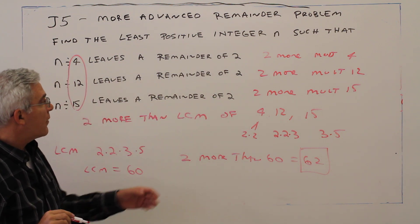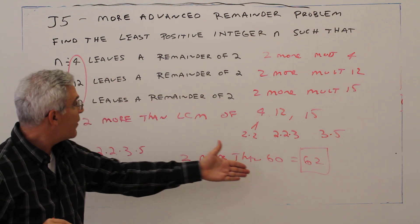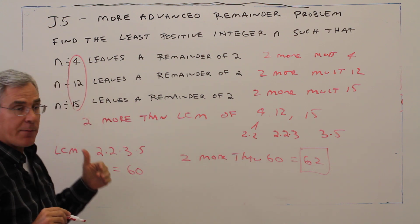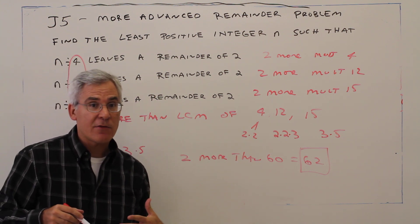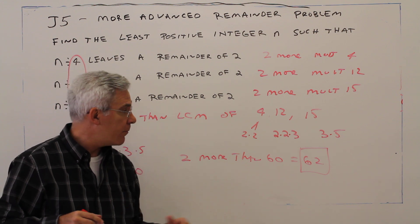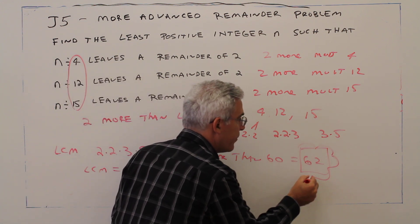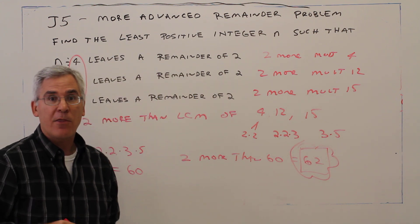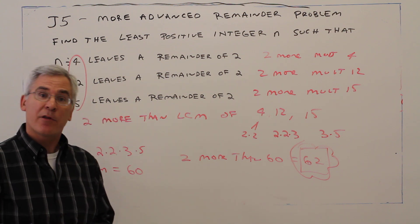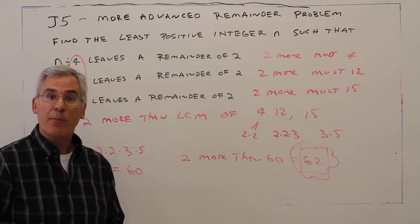And 62 divided by 4, 62 divided by 12, 62 divided by 15, in each case we'll leave a remainder of 2. So this is the answer. And there you have it. Let us solve a little bit more interesting remainder problem.